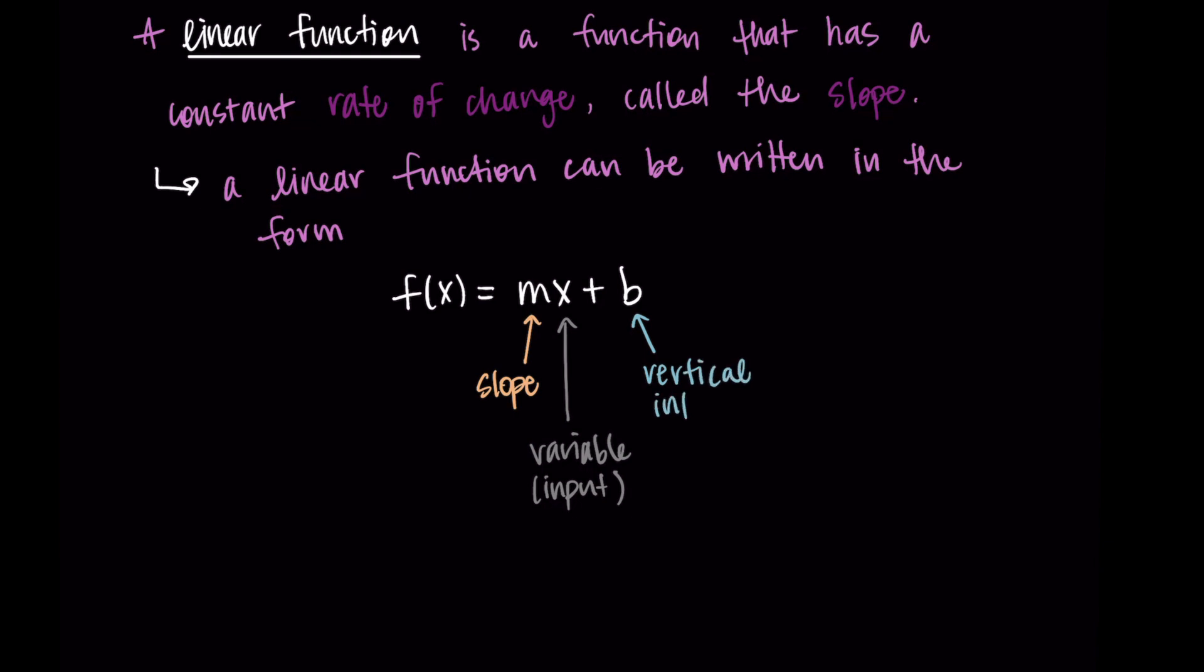So that +b is then the vertical intercept. That represents the vertical intercept of the line. We'll talk a little bit more about what that means going forward.